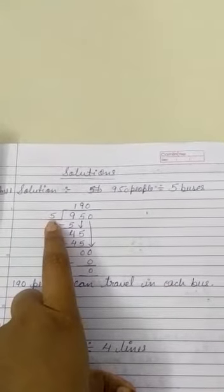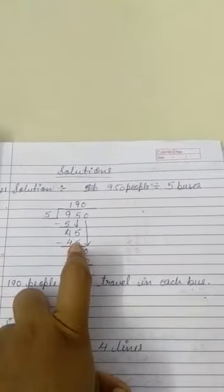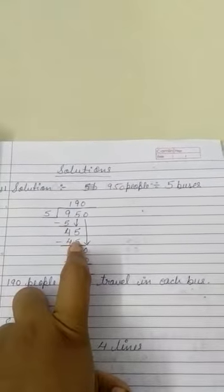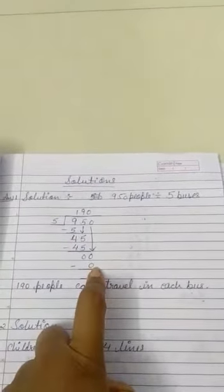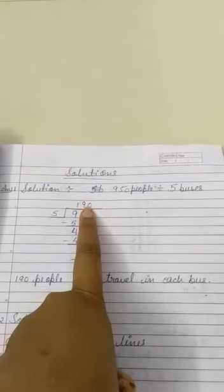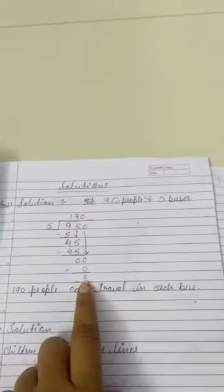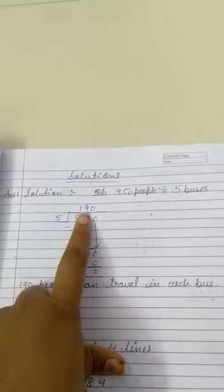Now subtract this, 4. Bring down the next digit, that is 5. Now in the 5 table, does 45 come? Yes, at 9. So 9 fives are 45. Now subtract this, you got zero. Bring this zero down, so zero comes zero times. So we have put the zero here and here also zero.